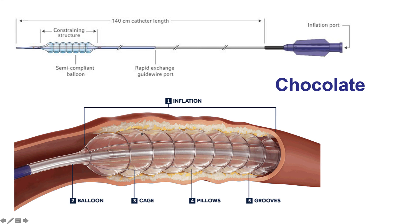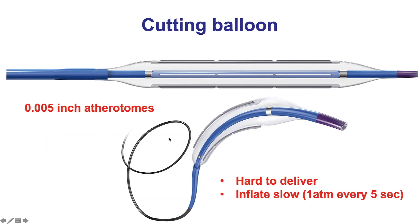The cutting balloon has small atherotomes embedded into it. What is special about this balloon is that it is hard to deliver, and when you do deliver it, you want to inflate very slowly — one atmosphere every five seconds — to allow enough time for the balloon to unwrap, and also when deflated, allow enough time for the balloon to rewrap without damaging it. It can provide good modification of the lesion. All of these plaque modification balloons are less likely to have the watermelon seeding effect because the atherotomes or the wires around the balloon minimize balloon movement and anchor the balloon against the plaque.